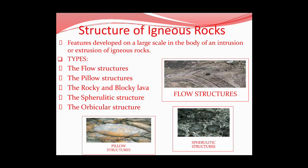Structure of igneous rock is formed by intrusion or extrusion, either at the surface or below the surface of the Earth. Types of structures include flow structures, pillow structures, rocky and blocky lava structures, spherulitic structure, and orbicular structure. Spherulitic structure has minerals grouped together in a particular assembly. Orbicular structure is formed due to minerals assembled in a different pattern, determined by cooling effect, different cooling temperatures, and times of cooling.